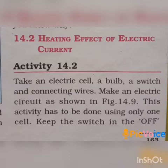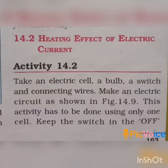Activity 14.2: Take an electric cell, a bulb, a switch, and connecting wires. Make an electric circuit as shown in figure 14.9. This activity has to be done using only one cell. Keep the switch in the off position.